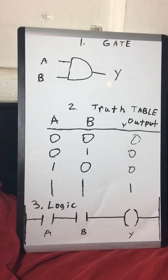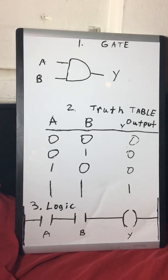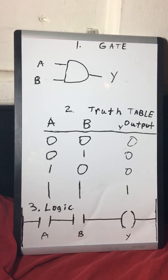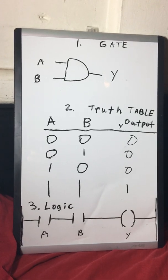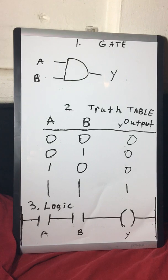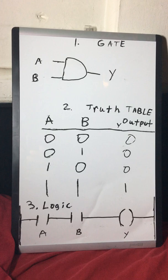In the truth table, if you have inputs A and B both zero, your output is going to be zero. That means it will not activate the output.